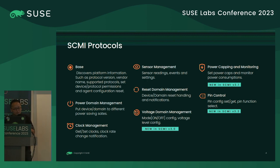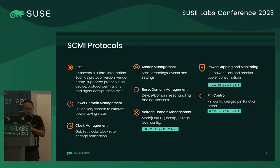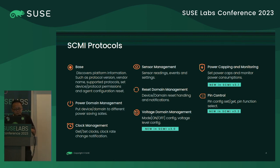Clock management lets you set and get clocks through SCMI. Sensor management is for hardware measuring, and reset domains handle domain resets — not just CPU reset, but also reset processes for specific devices or multiple devices at once. Voltage domains are used to control and manage regulators or power sources used by a chip. Power capping handles throttling cases where you need to decrease power consumption.